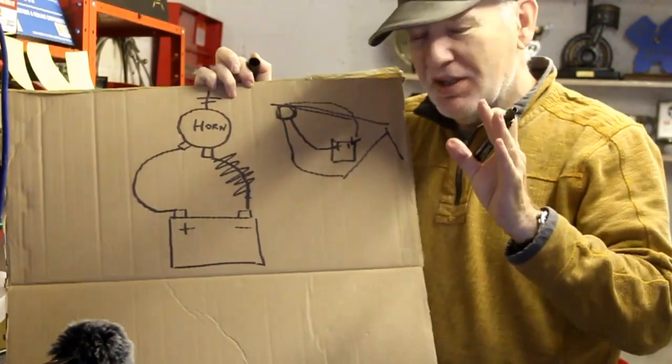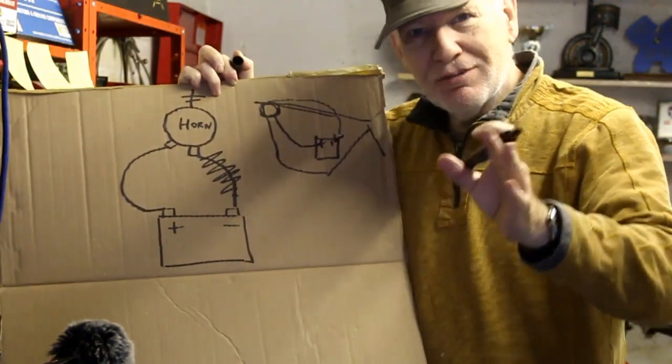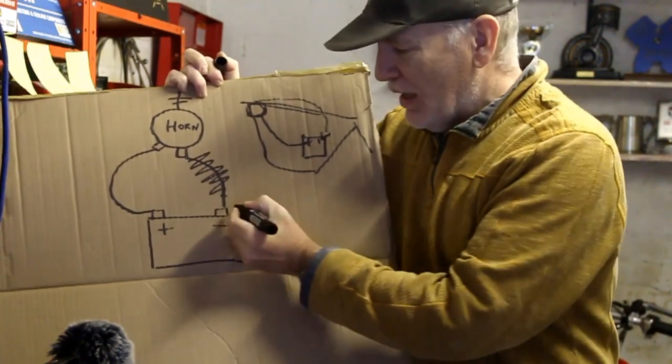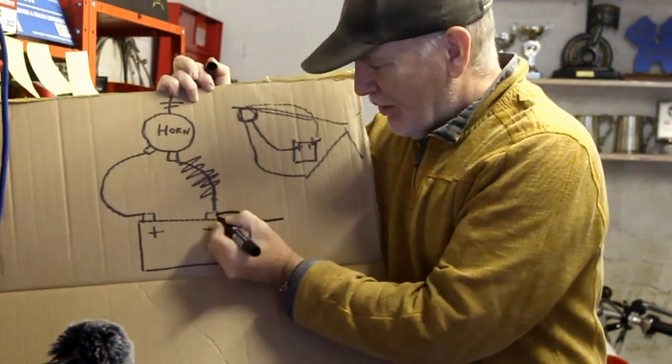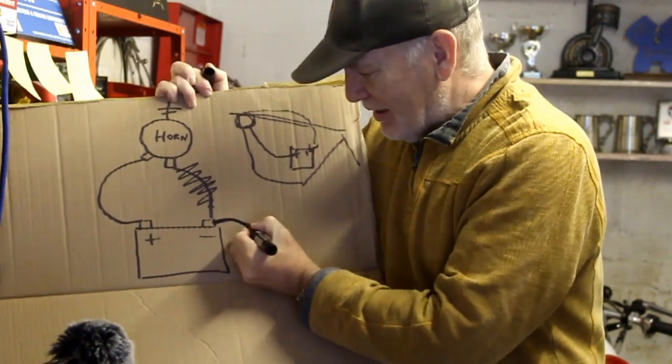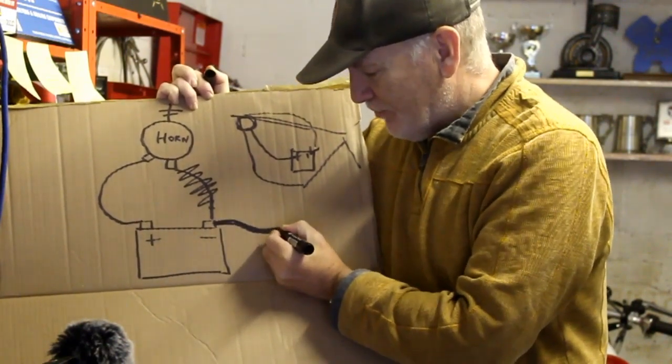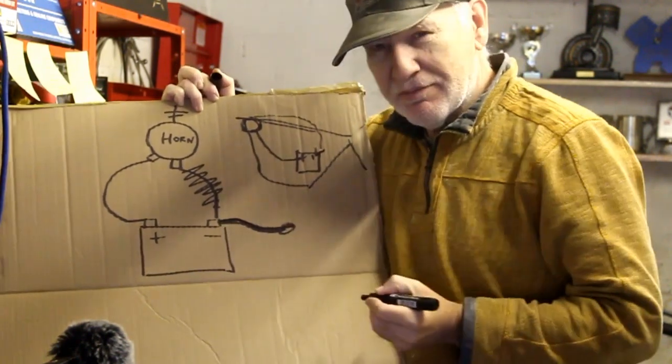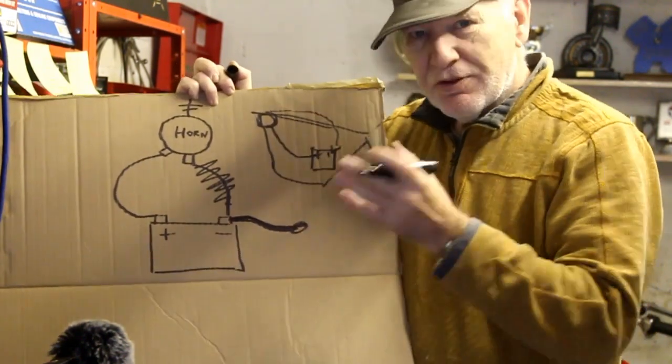All the way back to the negative terminal of the battery. And this is interesting because if you go and look at your motorbike, you should find there'll be one thick wire going from the negative terminal of your bike to the frame.